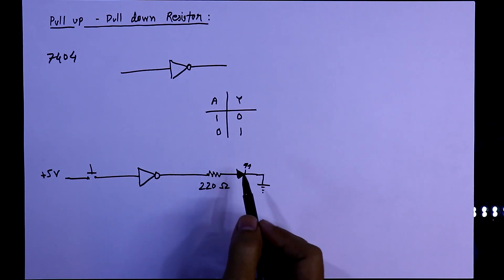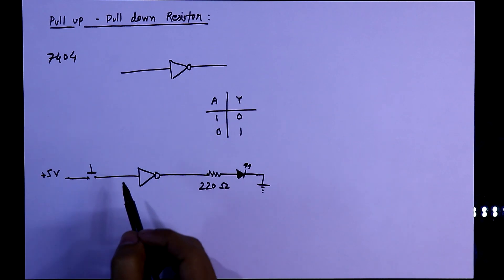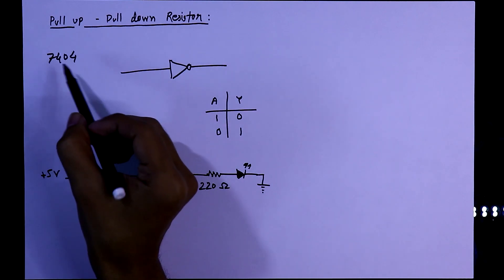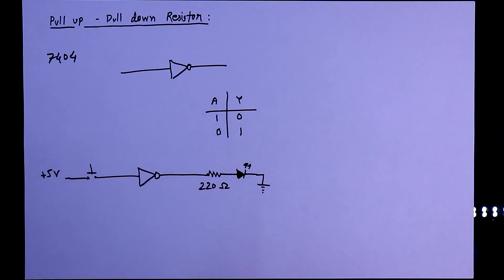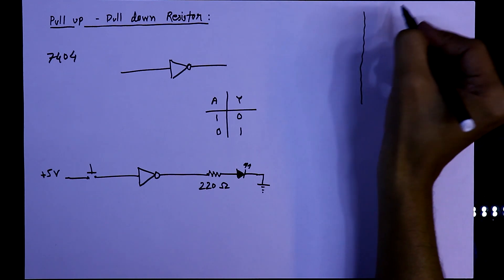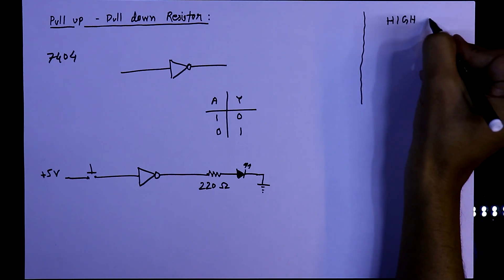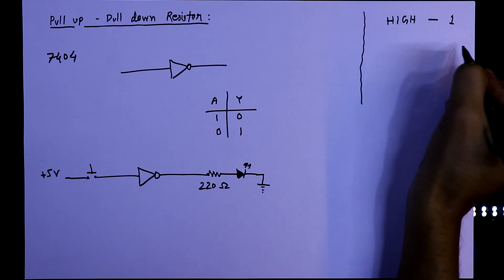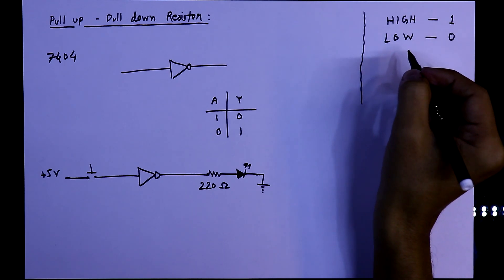Now first I will show you what will happen without using pull-down or pull-up resistor. Before that, we have to know one thing: in the digital circuit it has 3 states. One is high, or it is known as 1, the second state is low, also known as 0.